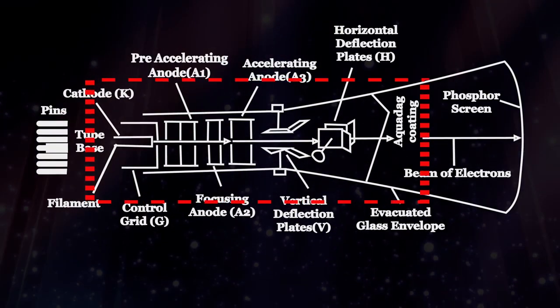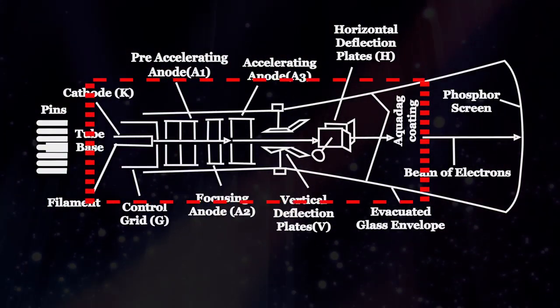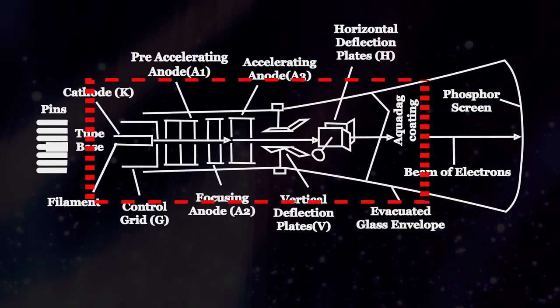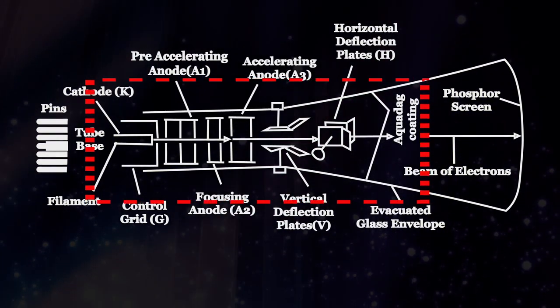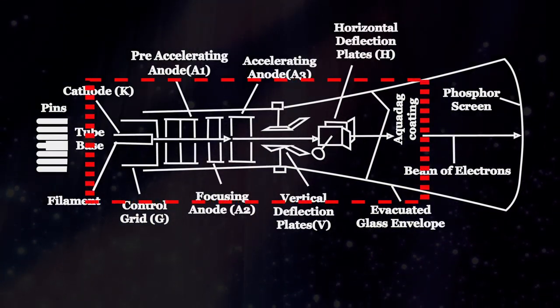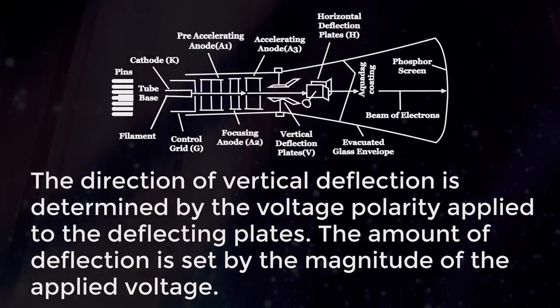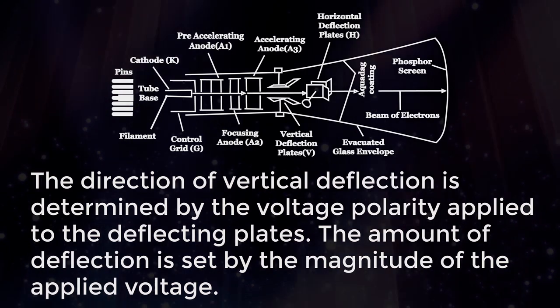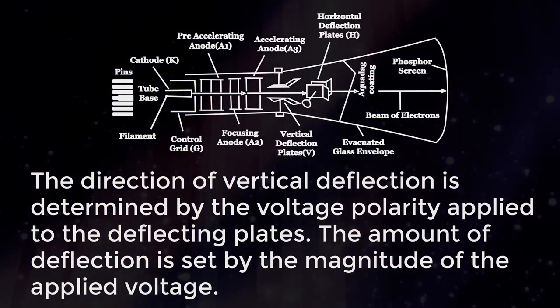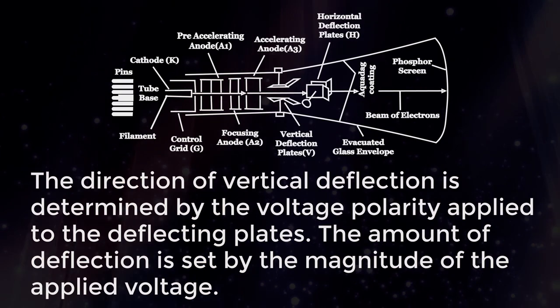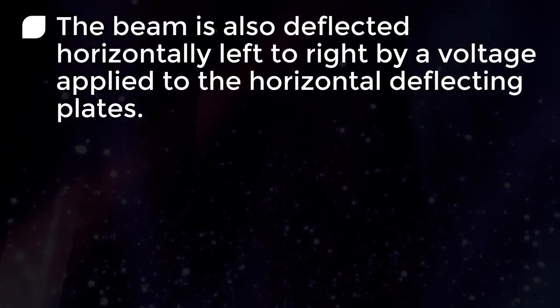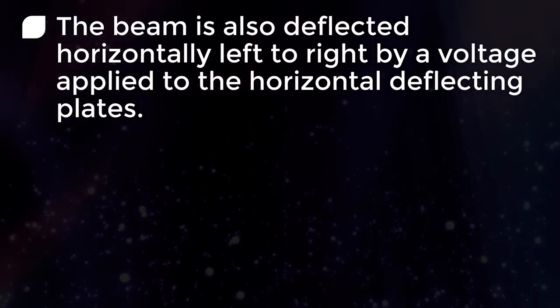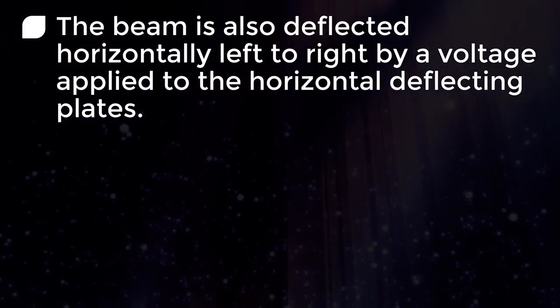The high velocity well-defined electron beam then passes through the two sets of deflection plates. The first set of plates is oriented to deflect the electron beam vertically up or down. The direction of vertical deflection is determined by the voltage polarity applied to the deflection plates. The amount of deflection is set by the magnitude of the applied voltage. The beam is also deflected horizontally left to right by a voltage applied to the horizontal deflecting plates.